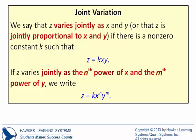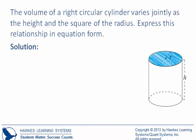Let's consider an example. The volume of a right circular cylinder varies jointly. So we know that the volume, which we're going to use V for, varies jointly as the height and the square of the radius. So here are two variables: height and the square of the radius.